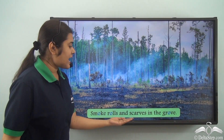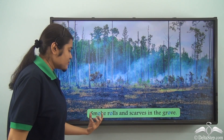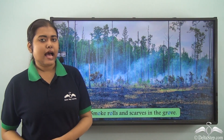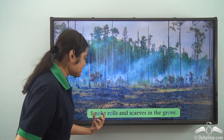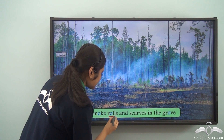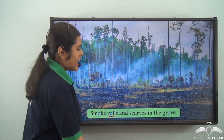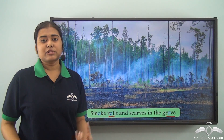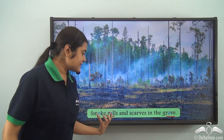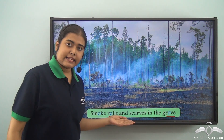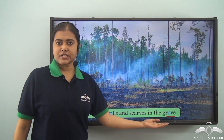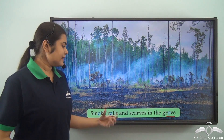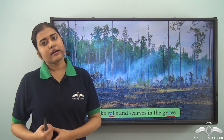'Smoke rolls and scarves in the grove.' In this sentence, smoke, rolls, and grove are showing assonance. The O vowel sound in 'smoke' is the same as that in 'rolls' and the same in 'grove'. This vowel sound O is being repeated in these three words in the same line and they are pretty close to each other. Hence, we can say that these words are showing assonance.